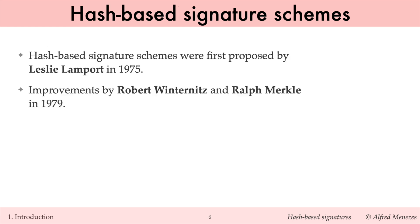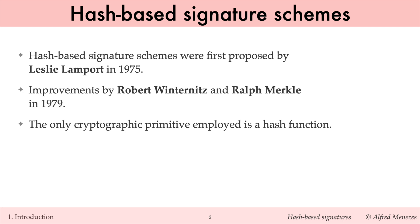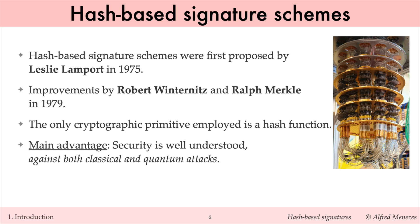Hash-based signature schemes were first proposed by Leslie Lamport in 1975, followed by important improvements by Winternitz and Merkle in 1979. Hash-based signature schemes have the unique advantage that their security depends solely on standard cryptographic properties of hash functions. Consequently, their security is well understood against both classical and quantum attacks, making them viable replacements for RSA and elliptic curve signature schemes in the post-quantum world.